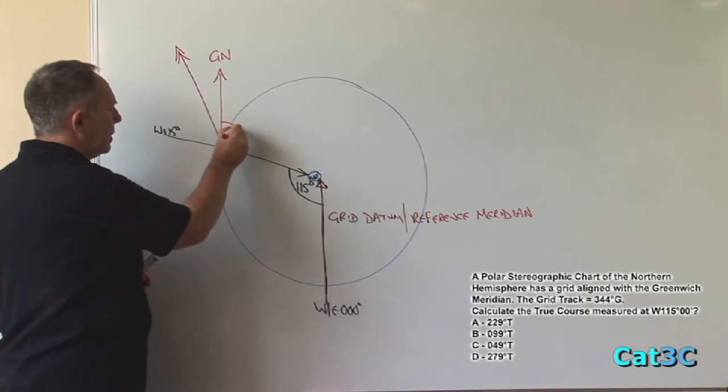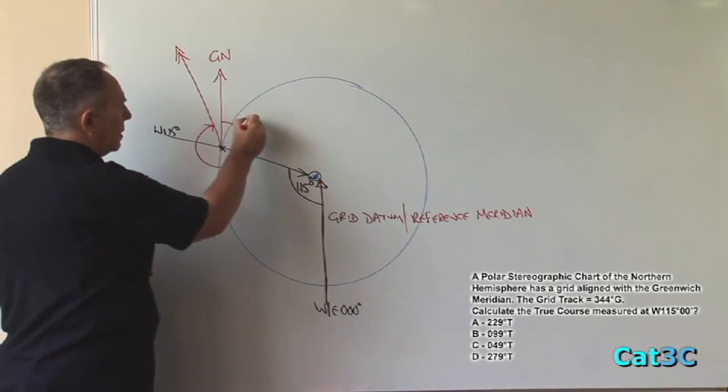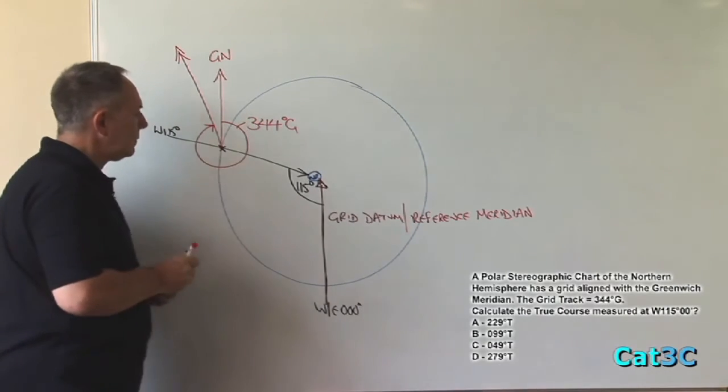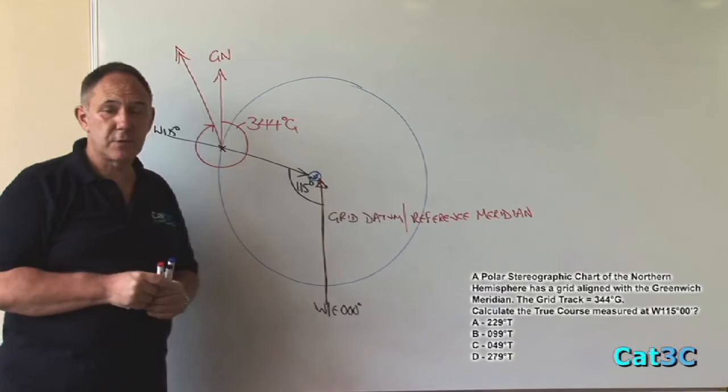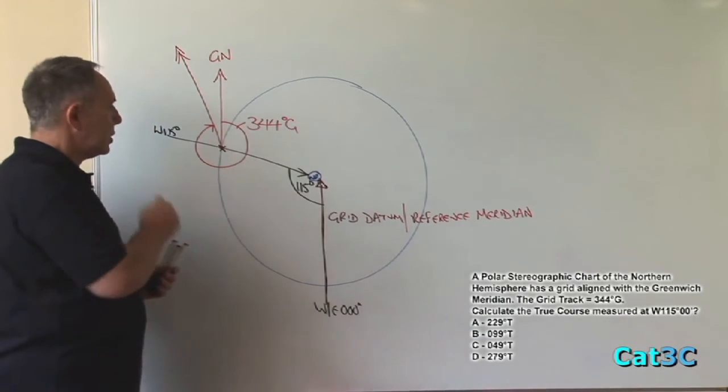So this angle here is the grid track of 344 degrees grid. But the question is asking me for the true track and the true track is measured in the same position.